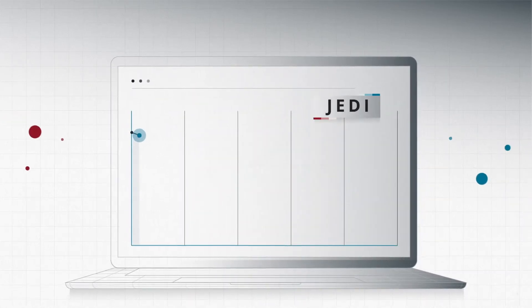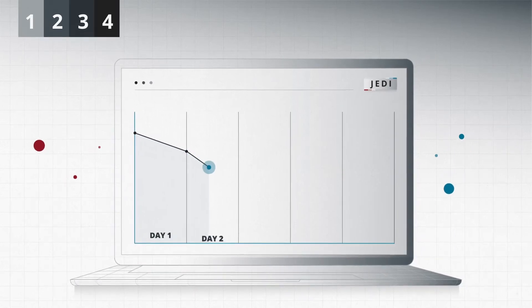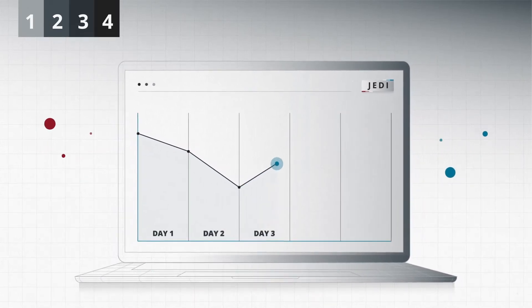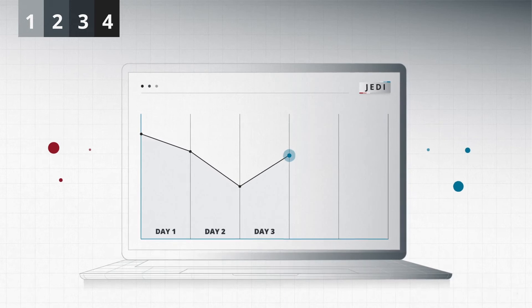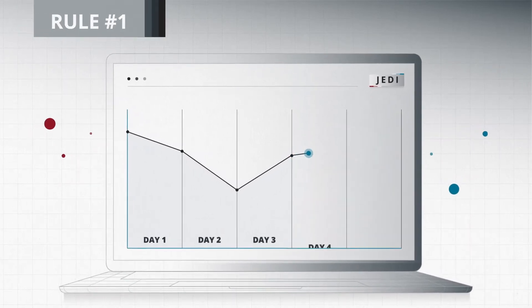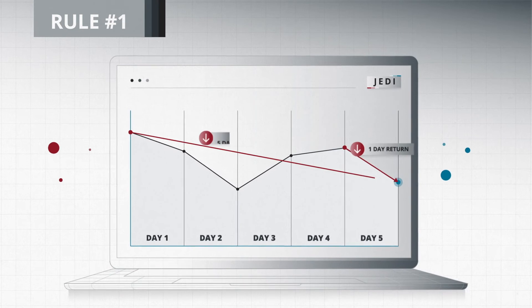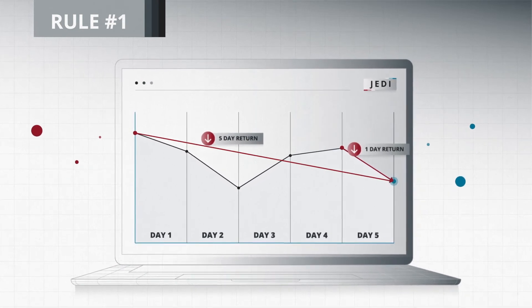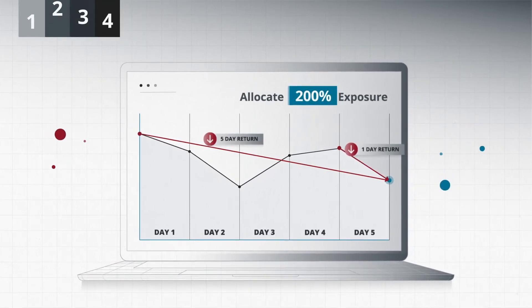JEDI works by activating four consistent rules built on the concept of buying low and selling high that adjust exposure to the broad market. Rule 1: If the previous 1-day and 5-day returns are negative, allocate 200% exposure.